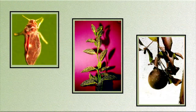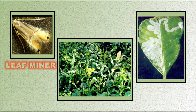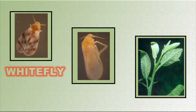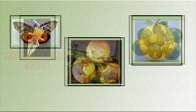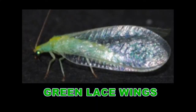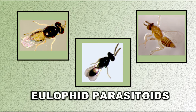Among the pests of economic importance in India, citrus blackfly, leaf miner, psylla, whitefly, mealybug, bark-eating caterpillar, fruit-sucking moth, and thrips are significant. Among management measures, biocontrol agents like predators — green lacewings, ladybird beetles, antlions — and parasitoids of citrus psylla and citrus leaf miner play a key role in regulating pest populations.